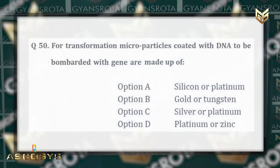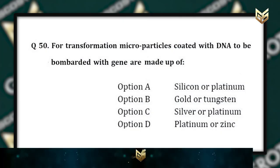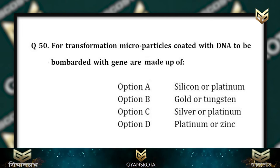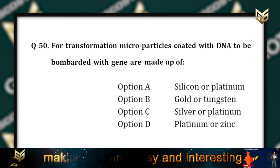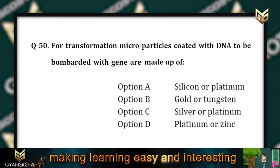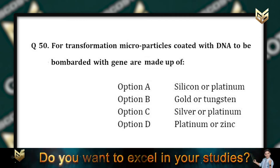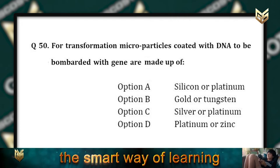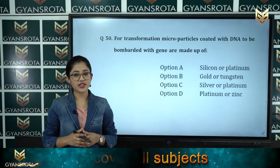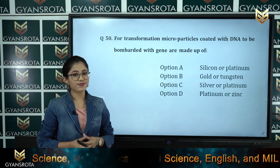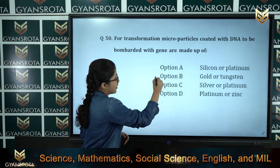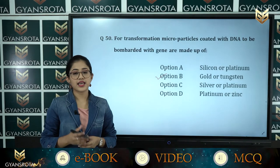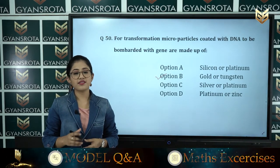Question 50: For transformation, microparticles coated with DNA to be bombarded with a gene gun are made up of option A: Silicon or platinum, option B: Gold or tungsten, option C: Silver or platinum, option D: Platinum or zinc. The correct answer is option B, gold or tungsten, from the chapter Biotechnology: Principles and Processes.